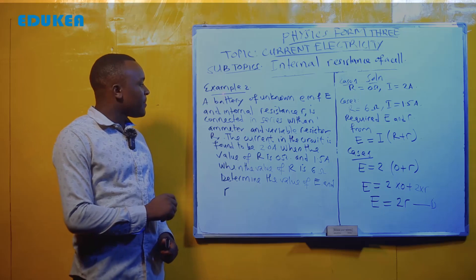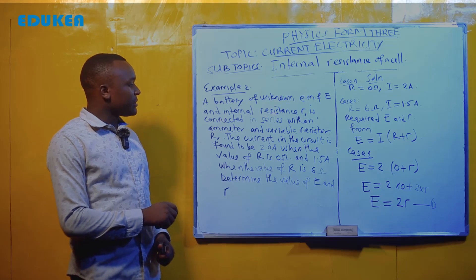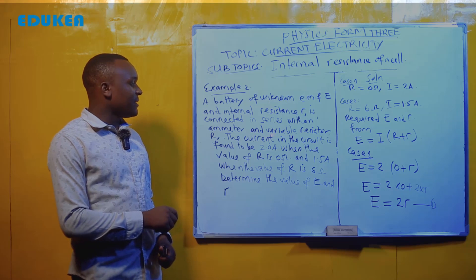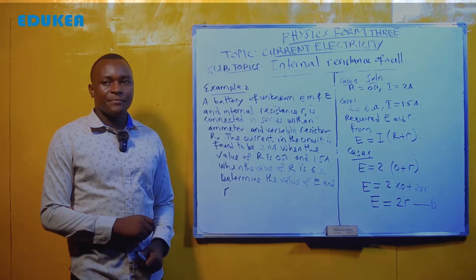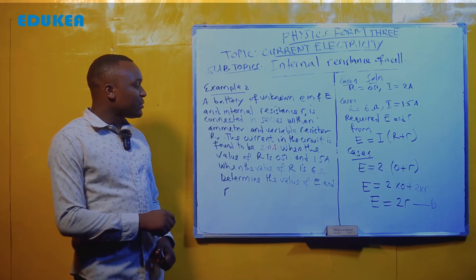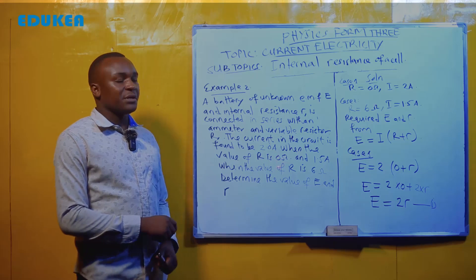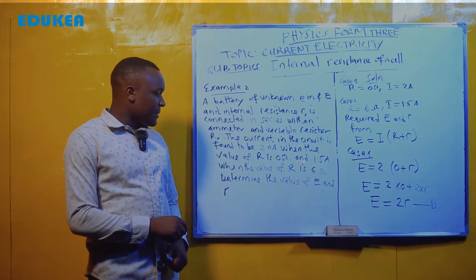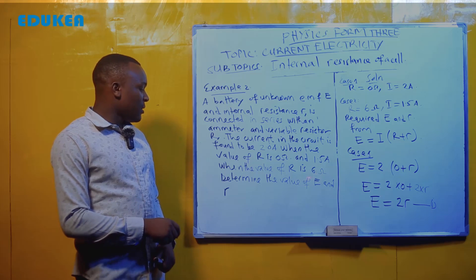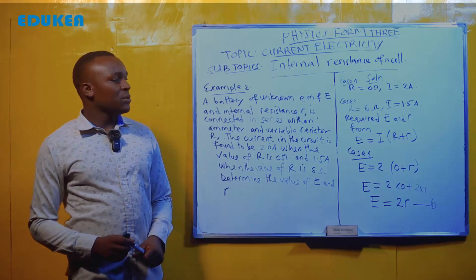A battery of uniform EMF and internal resistance r is connected in series with an ammeter and variable resistor R. The current in the circuit is found to be 2.0 ampere when the value of R is equal to 0 ohm, and 0.5 ampere when the value of R is 60 ohm. Now determine the value of EMF and the internal resistance.